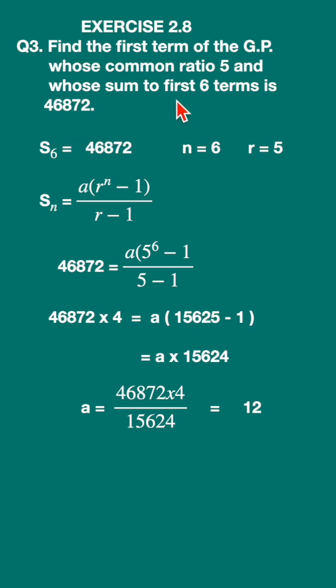Here they have given us the sum of the first 6 terms, that is S₆ = 46872. The number of terms is 6, n = 6, and the common ratio r = 5.